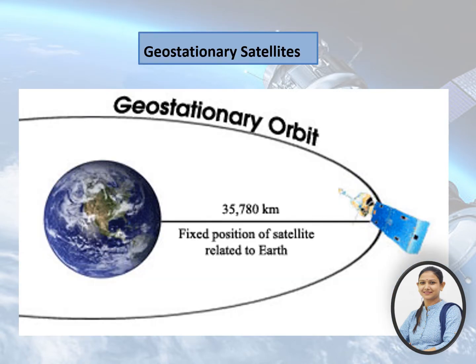A satellite is any object that is in orbit around a planet. Our moon and earth are examples of natural satellites. There are thousands of artificial or man-made satellites placed to orbit the earth to achieve various applications like remote sensing, navigation, global positioning, weather forecasting, etc.